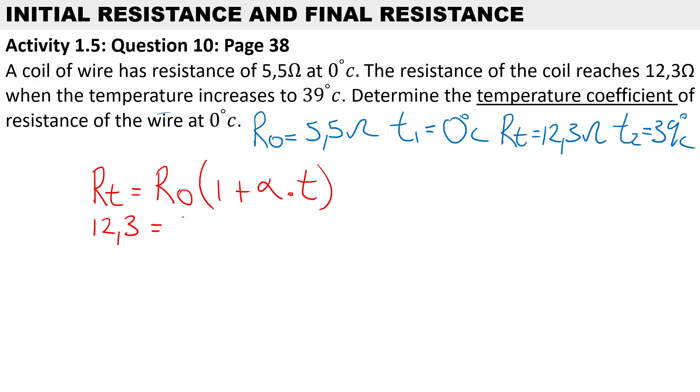of 5.5. Inside the brackets we have 1 plus the temperature coefficient α times the change in temperature. Now 39 degrees minus 0 degrees will give you 39, so we just substitute 39 over here. That will give us our final temperature 39 degrees Celsius. So over here we have a multiplication sign, so if we